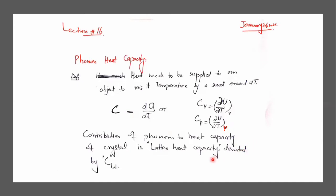Heat capacity is generally associated with some material, but specifically when we talk about phonons, we will talk about phonon heat capacity. It is denoted by C-Lattice. So if phonons have a corresponding heat capacity, that is Lattice heat capacity. We will talk about Lattice heat capacity.